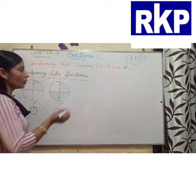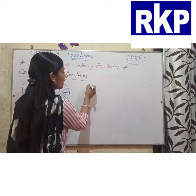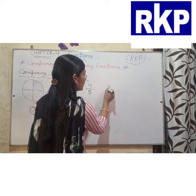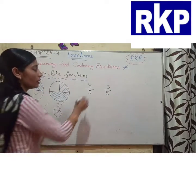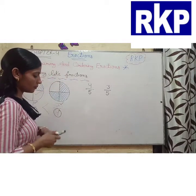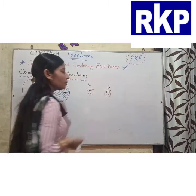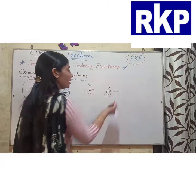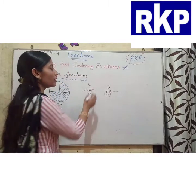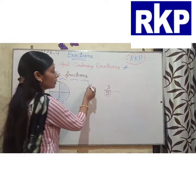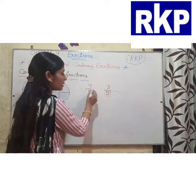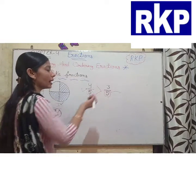Let us take one more example. Suppose we have 2 fractions: 4 by 5 and 3 by 5. Here we can see that the denominators are the same, so these are like fractions. We need to check only the numerators. Here we can see 4 is greater than 3, so 4 by 5 is greater than 3 by 5.